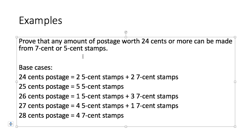So in that case, the older one needs to be 5 cents less than the new one. So you might want to be able to go back 4 cents to the one you assume is correct. So in that case, we might need 5 base cases. So 24 cents postage, you can have 2 5-cent stamps and 2 7-cent stamps. 25 is just 5 5-cent stamps. 26 is 1 5-cent stamp and 3 7-cent stamps, and 28 cents postage is 4 7-cent stamps.